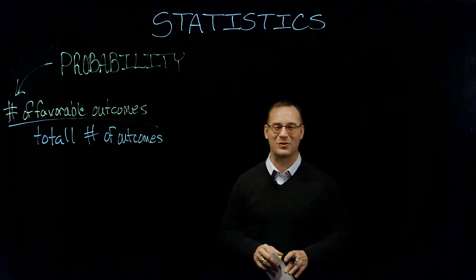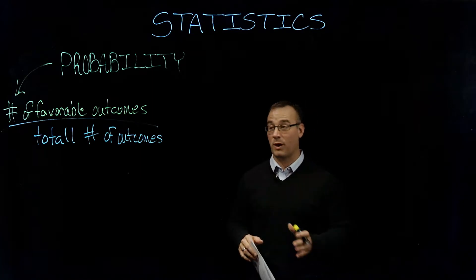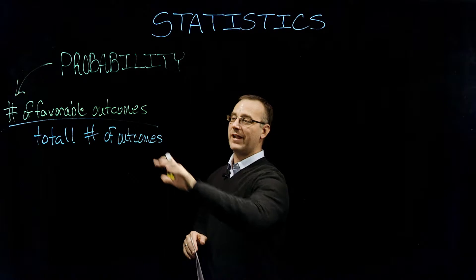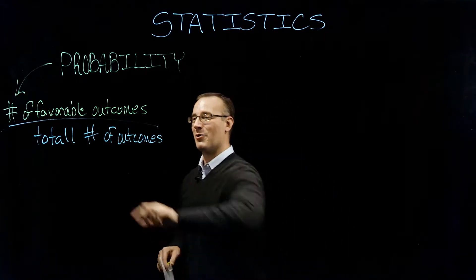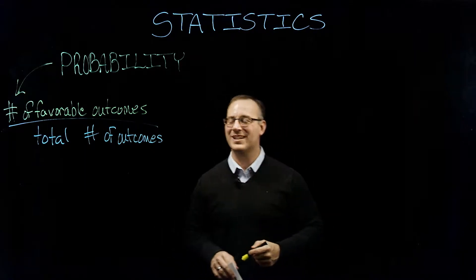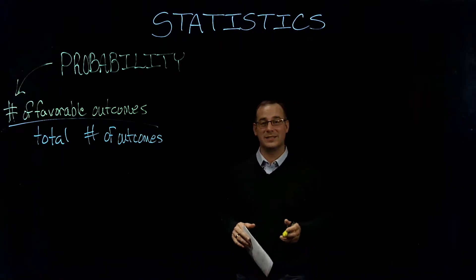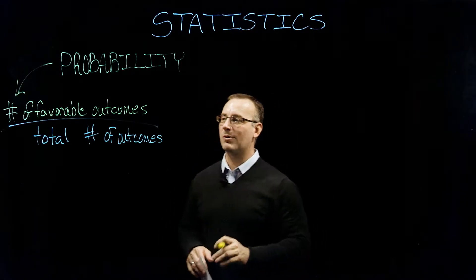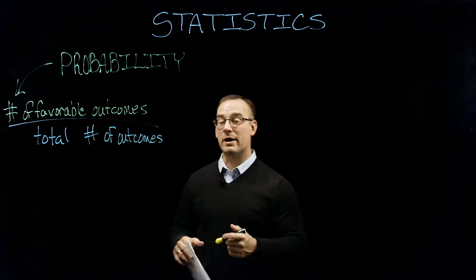We're going to work through some fun examples for you. So in essence, probability from a formula standpoint is just the number of favorable outcomes divided by the total number of outcomes. So when we look at some examples, I think this is going to become a little bit clearer.